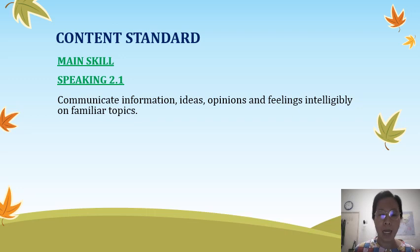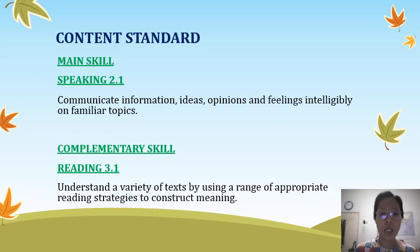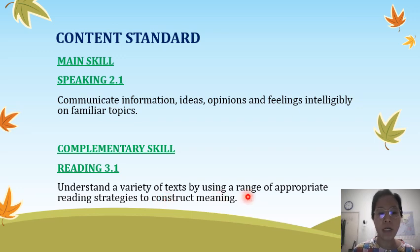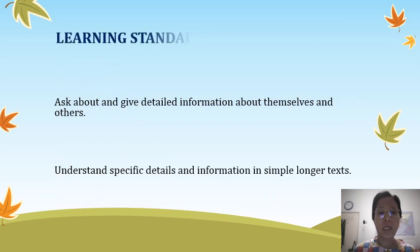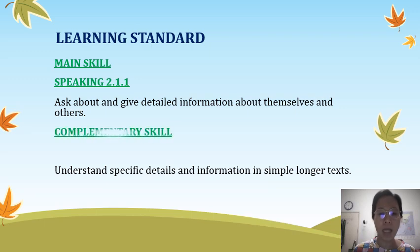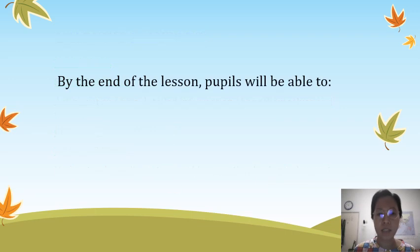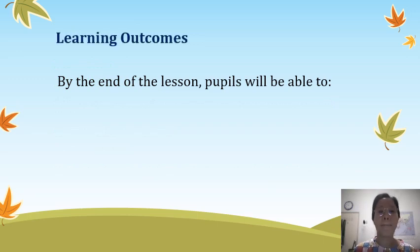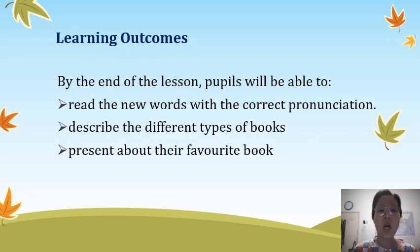The content standard for today's lesson is communicating information, ideas, opinions and feelings intelligibly on familiar topics. Complementary skill reading 3.1: understand a variety of facts by using a range of appropriate reading strategies to construct meaning. The learning standard is to ask about and give detailed information about themselves and others, and to understand specific details and information in simple longer texts. By the end of the lesson, pupils will be able to read words with correct pronunciation, describe the different types of books, and present about their favourite book.